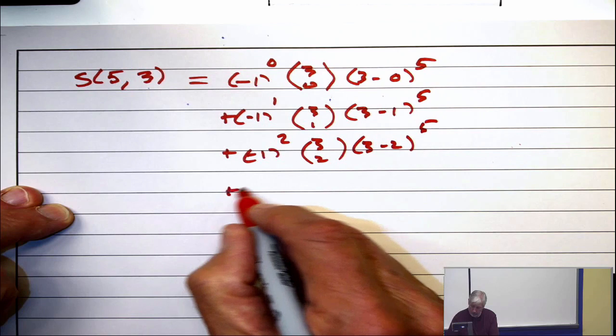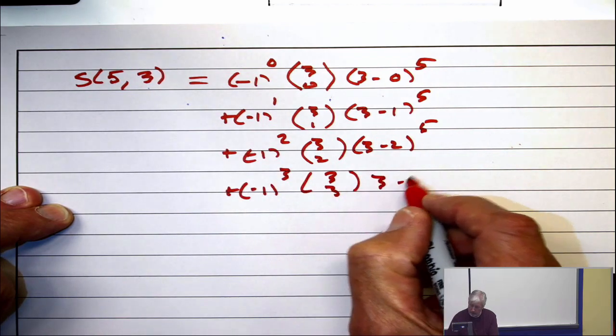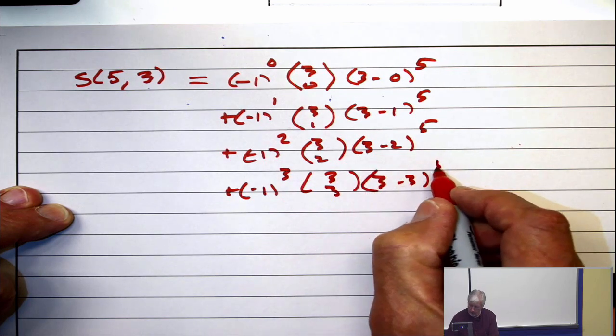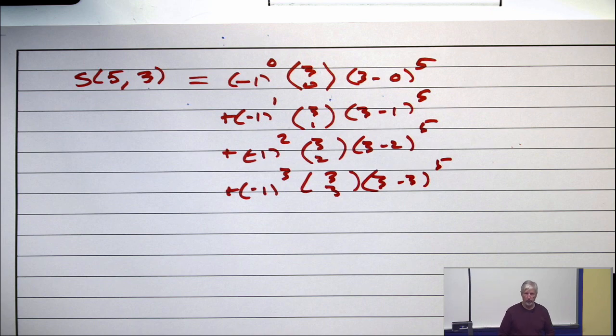plus minus 1 to the 3, times 3 choose 3, times 3 minus 3 to the 5th. All right. Let's complete this calculation. You do the work.